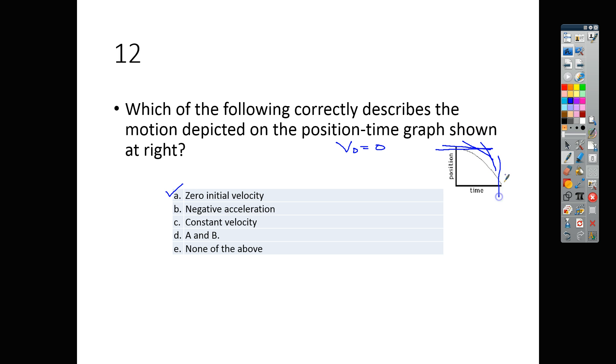We also see that as time goes on, if we draw tangent lines to the curve there, that we do have a negative acceleration. We do not have a constant velocity because we do have a curvy line. That means we're accelerating. So our answer here has got to be A and B.